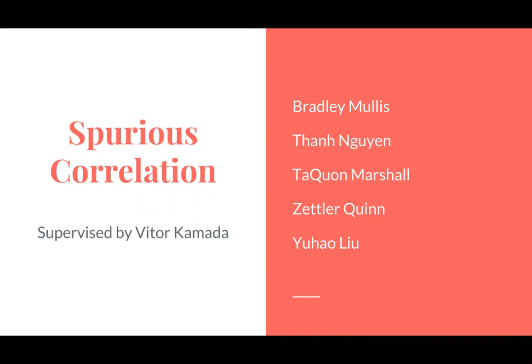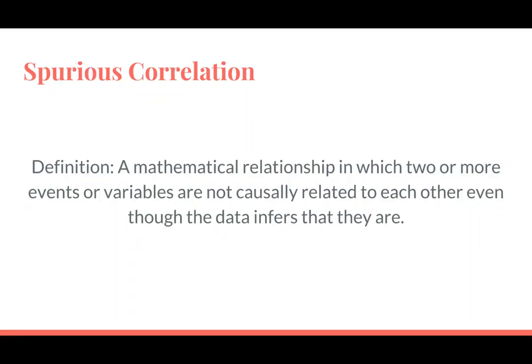Today we're going to be talking about spurious correlation. What is spurious correlation? The definition is a mathematical relationship in which two or more events or variables are not causally related to each other, even though the data infers that they are.